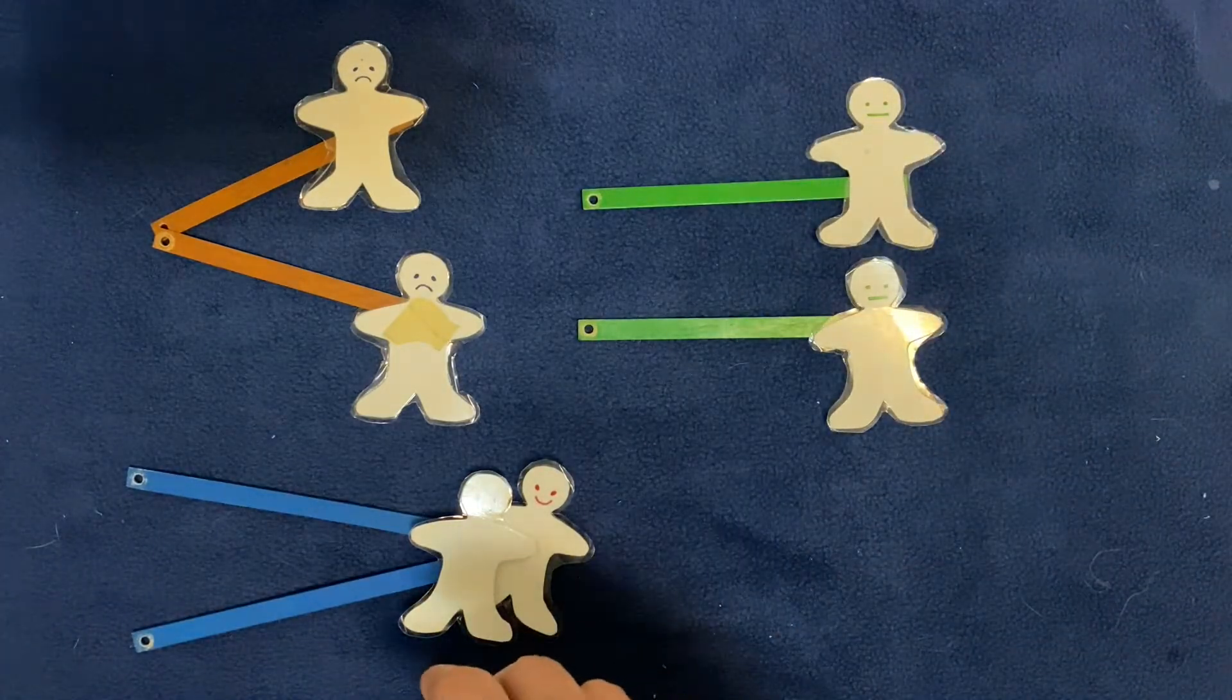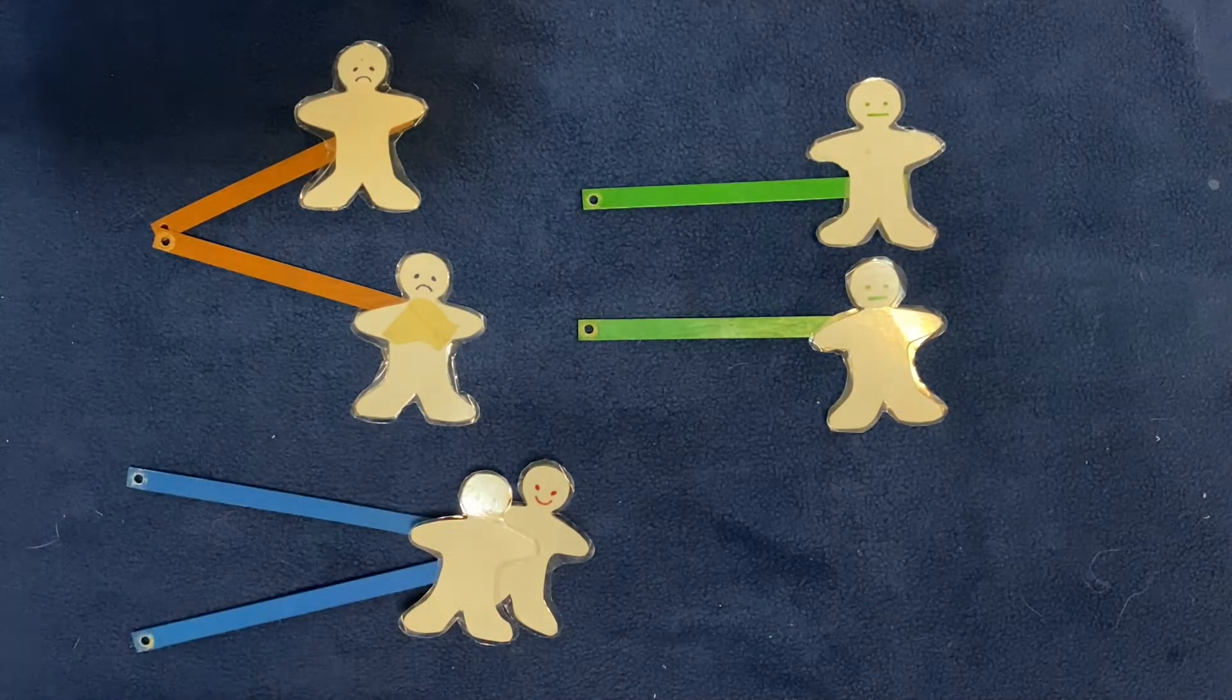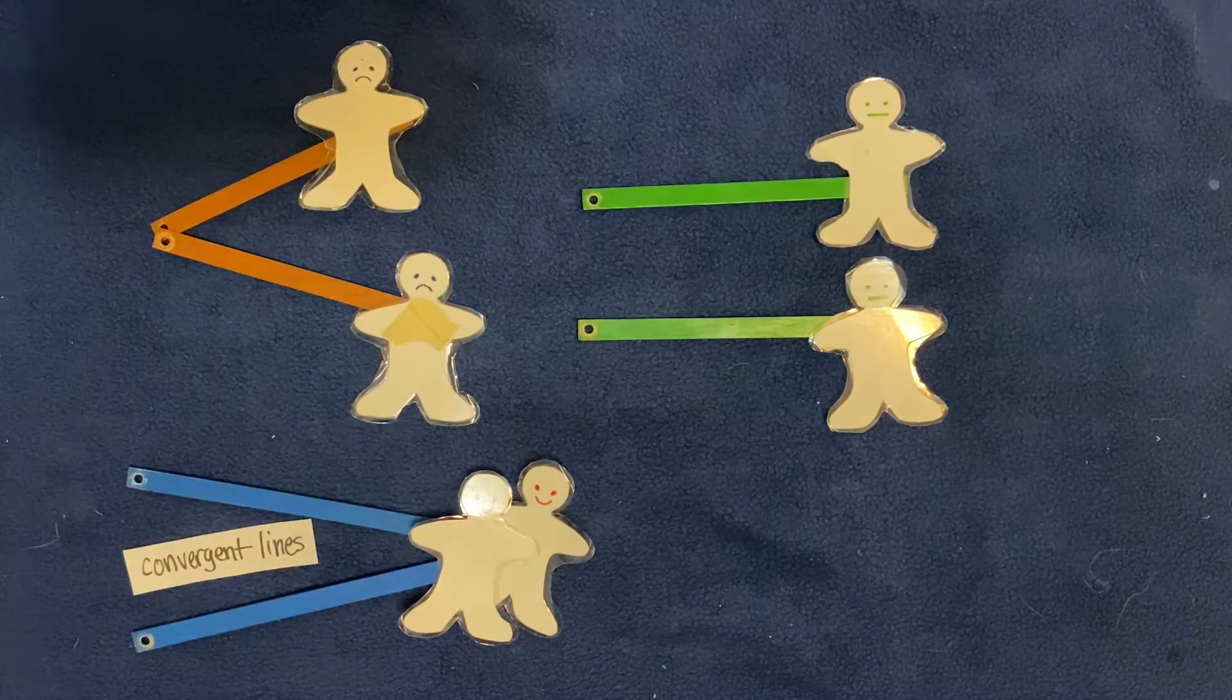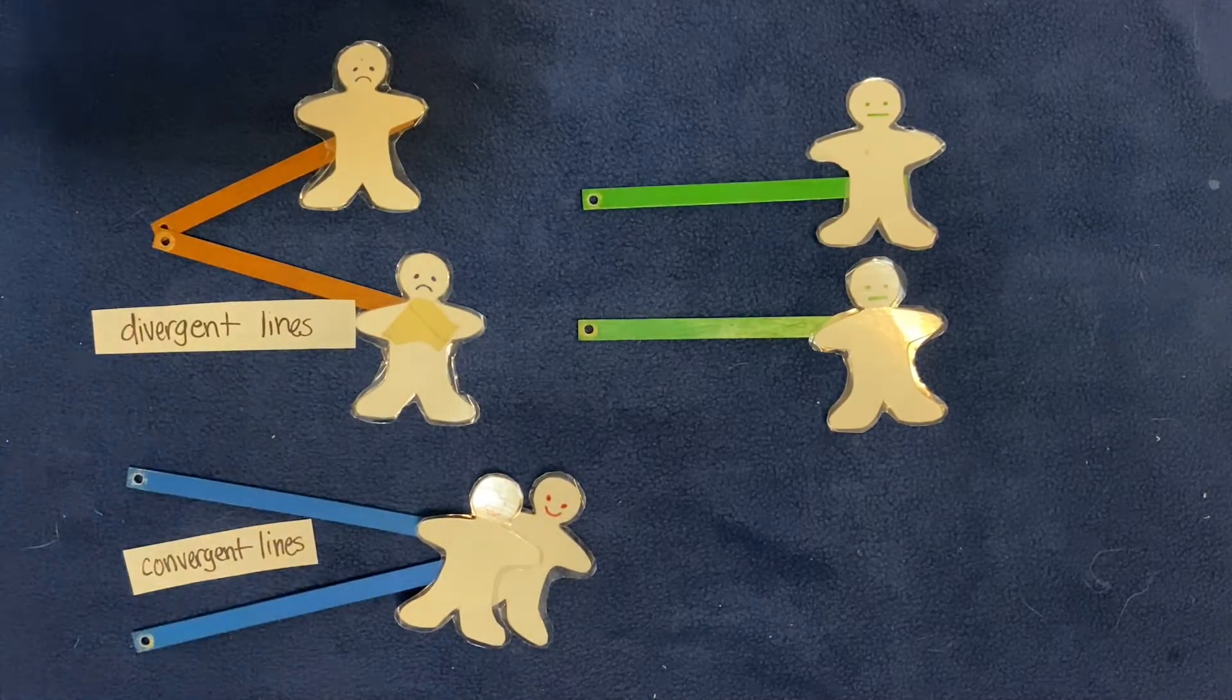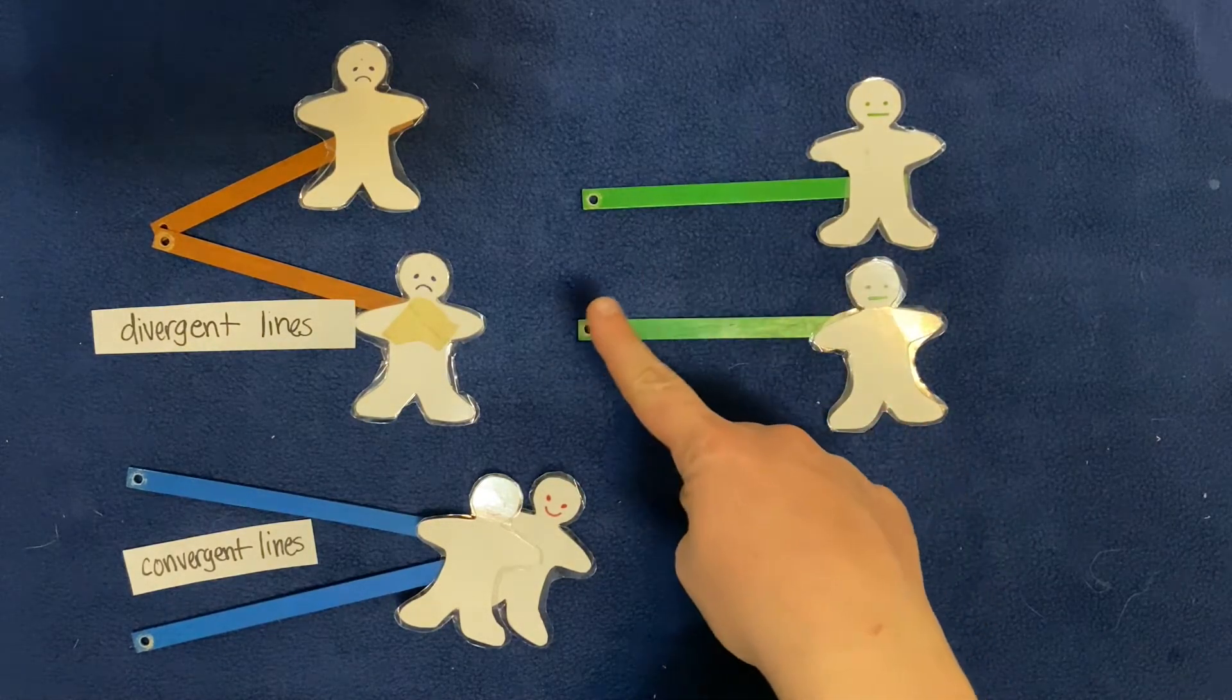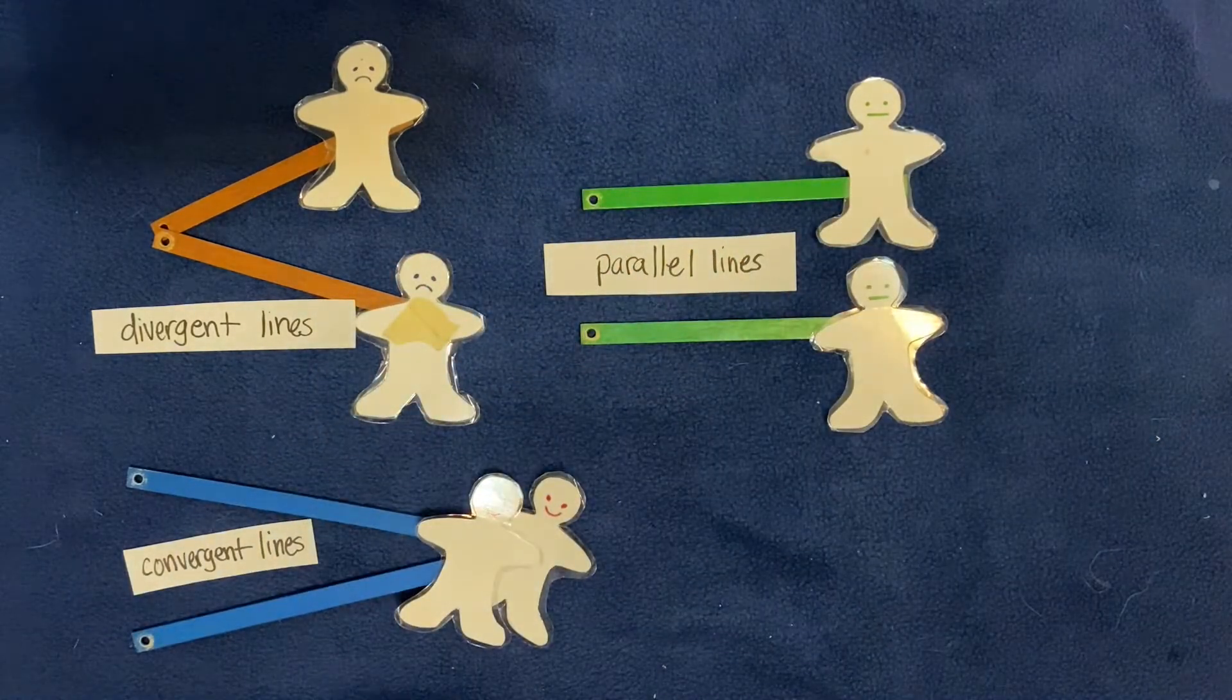So two lines that come together are called convergent lines, and two lines that go apart are called divergent lines, and two lines that go on and don't ever ever come in contact with each other and they're just perfectly right alongside each other are called parallel lines.